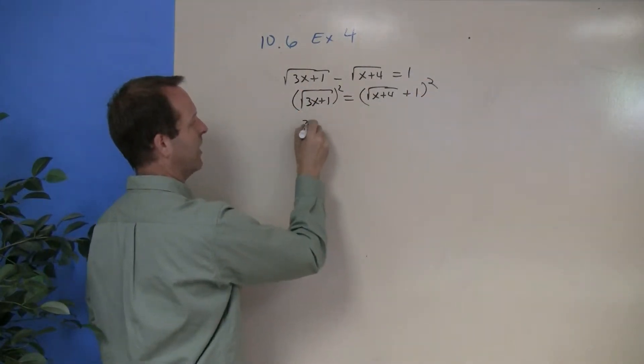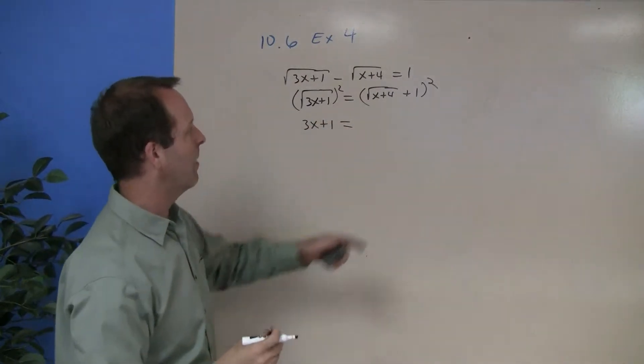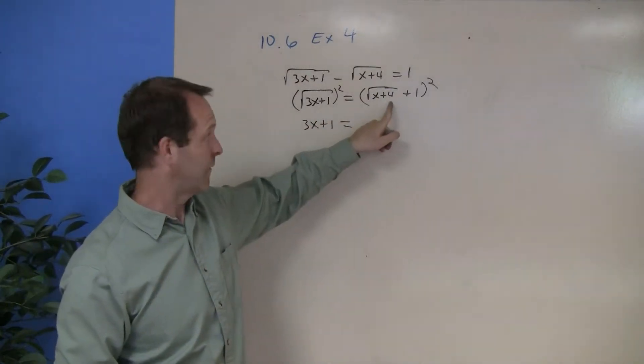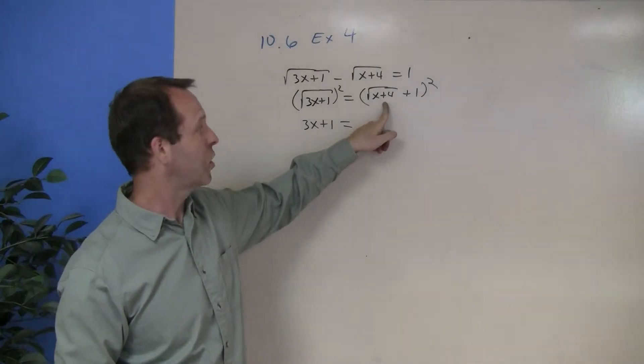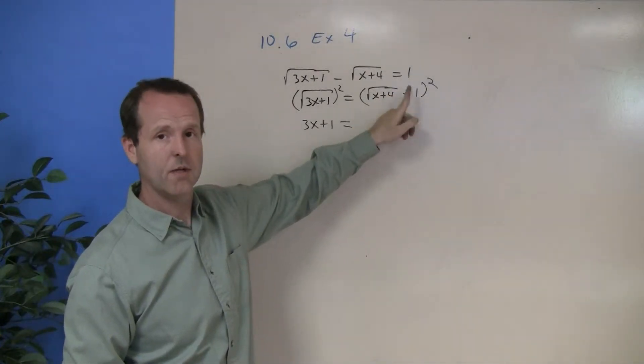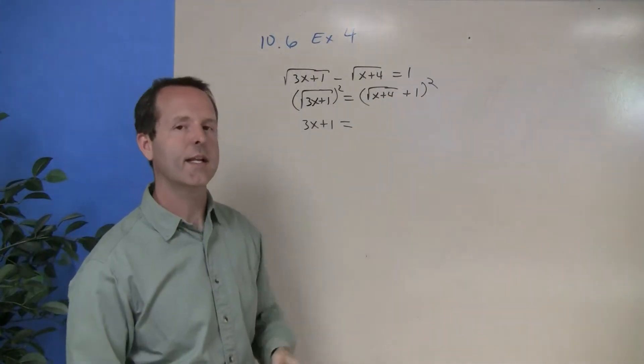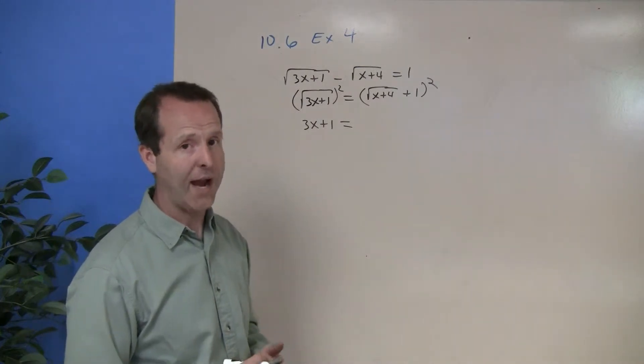I'll be left with a 3x plus a 1 equals. Now remember, when we square this guy, it's the first term squared plus 2 times this term times that term plus that term squared. Just some of those little factoring shortcuts that we practiced a lot on.